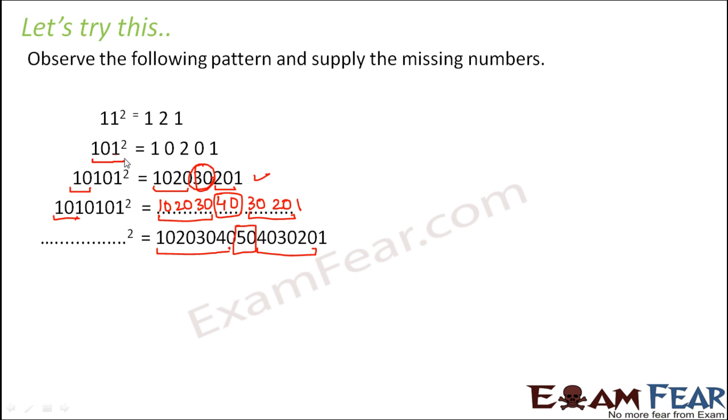Initially it was 1, 0, 1. Here 1 extra 1, 0 got added, so it became 1, 0, 1, 0, 1. In this step, 1 more extra 1, 0 got added, so it became 1, 0, 1, 0, 1, 0, 1.